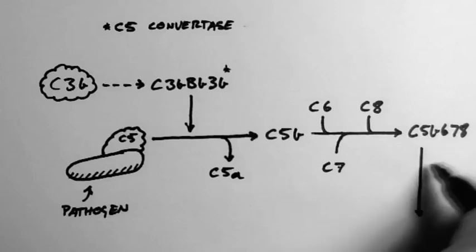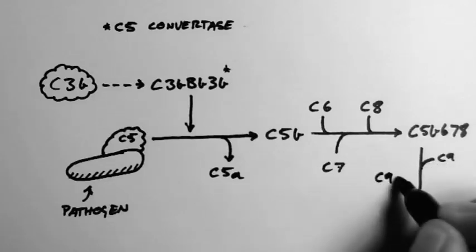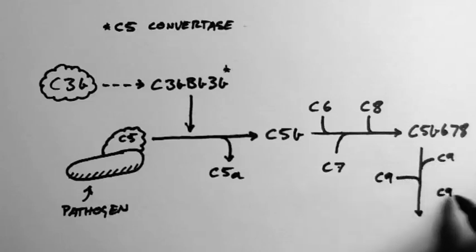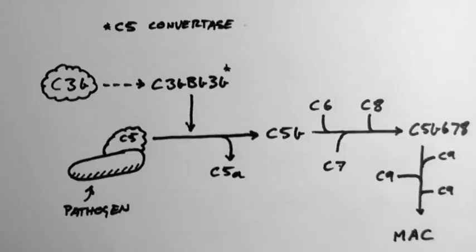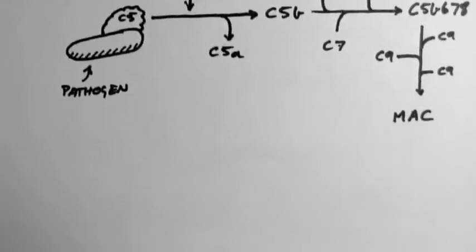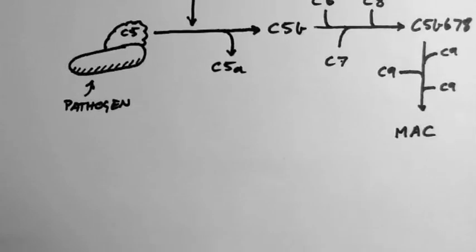This bit's also pretty easy. A whole lot of C9 molecules come in and join the party. Now as many of these can come in as is needed. This is usually about 10 to 16 molecules of C9, and this forms a membrane attack complex.